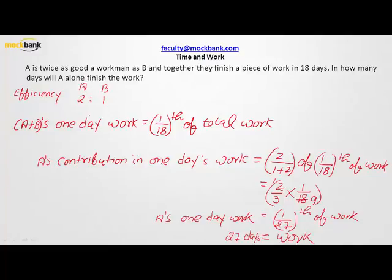That is how we came to deduce that A's 1 day work is going to be 1 over 27th of work. And hence, if you take this 27th in the numerator, we get 27 days would be required by A to finish the work.